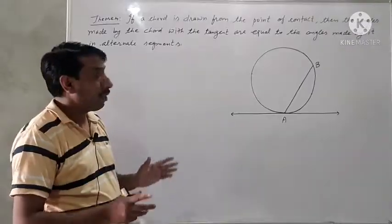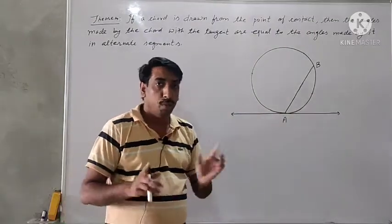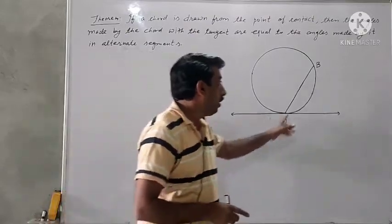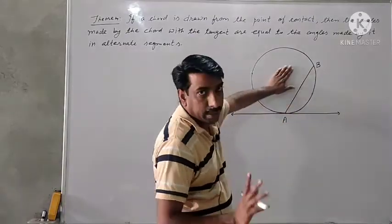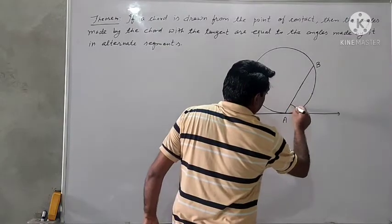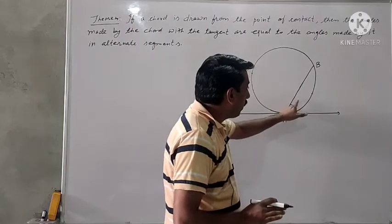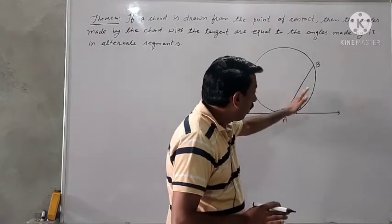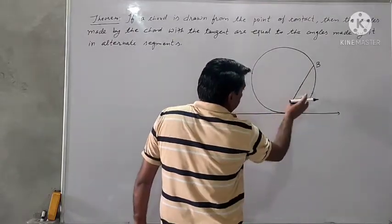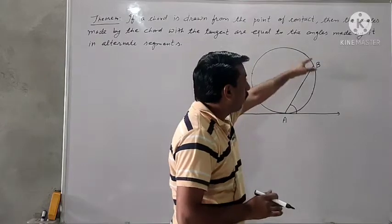Now, what is the meaning of alternate segments? You know that every chord divides the circle into two parts, and the name of both parts are segments. This chord makes two segments. The chord makes an angle with this tangent. Here is this angle. And this angle is made by this chord with the tangent in the direction of this tangent. The corresponding angle will be the angle at a point on the boundary of this circle.